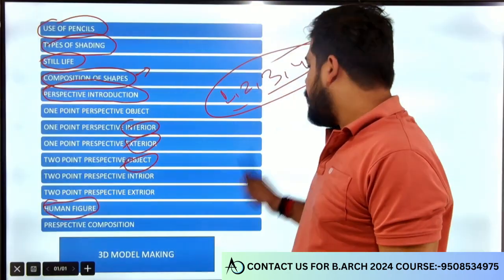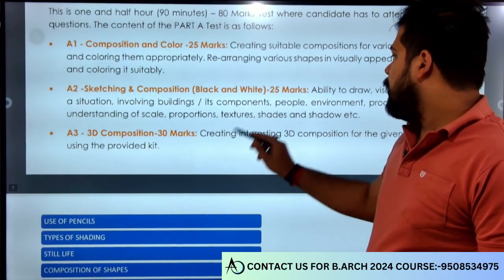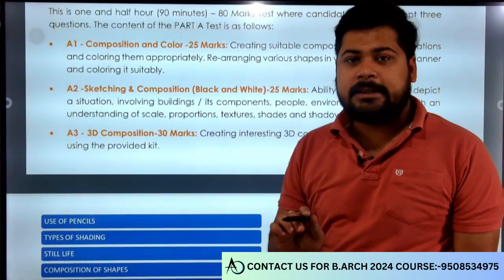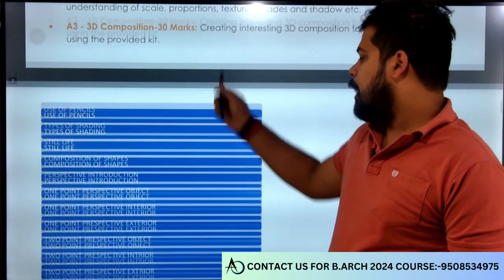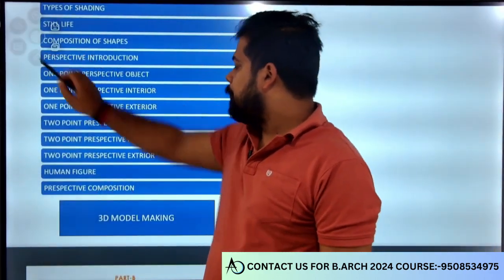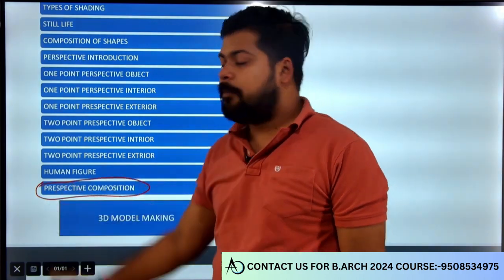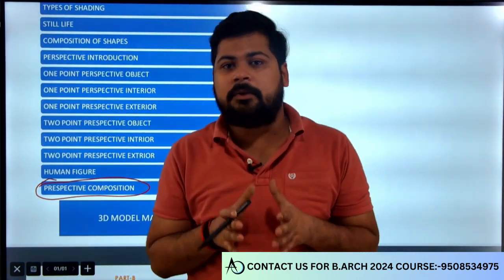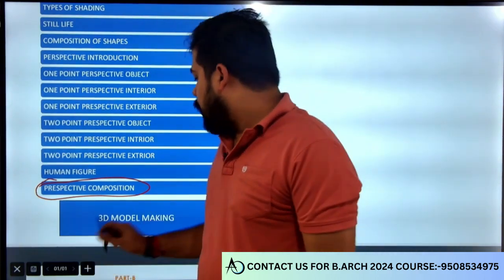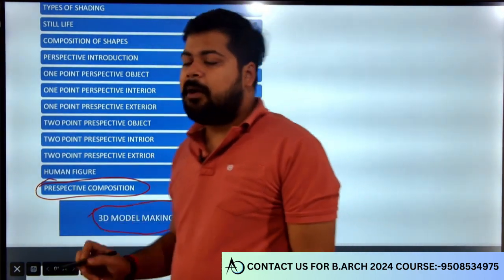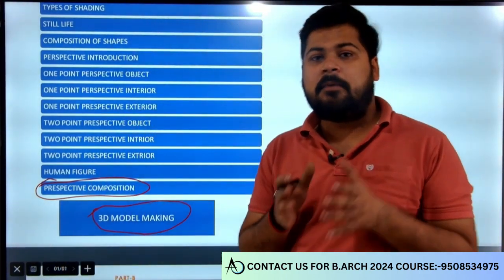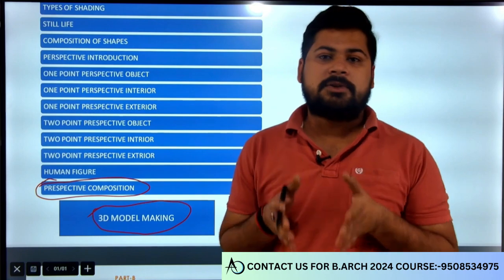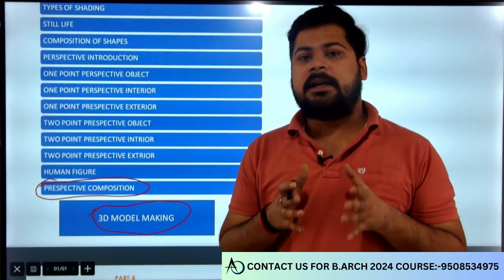इसलिए मैं कह रहा हूँ, क्योंकि यहाँ पर साफ साफ लिखा हुआ है कि environment, product, texture, setting, people - ये सारी चीजें आपको drawing में, sketch में बनानी हैं, तो आपको human figure भी cover करना पड़ेगा। फिर perspective drawings बहुत high level के होते हैं, according to JEE paper 2। साथ में हो सकता है 3D model making भी करना पड़े, जिसमें आपको physical model form करना पड़ेगा, situation के according। तो हम उसके लिए भी तैयार करेंगे - बहुत सारे situation tests के साथ इस तरीके से model making करोगे।